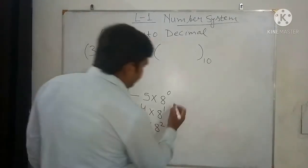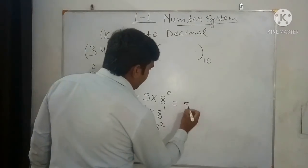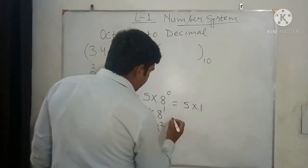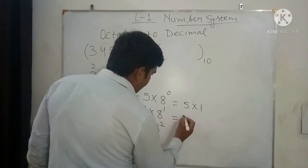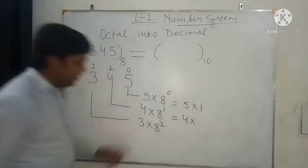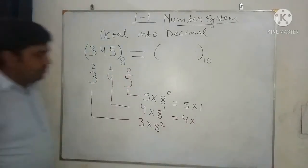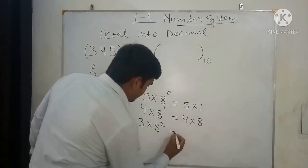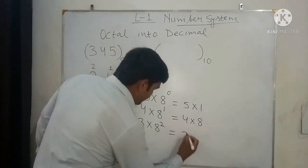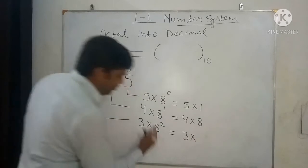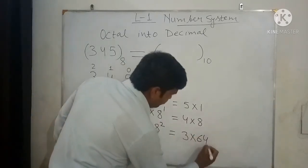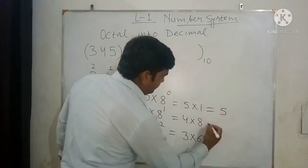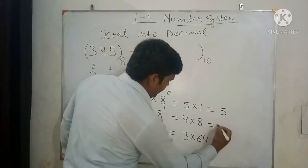Now we find the values. 5 multiplied by 8 to the power 0 equals 5. 4 multiplied by 8 to the power 1 gives 8, so 4 times 8 equals 32. 3 multiplied by 8 to the power 2 gives 64, so 3 times 64 equals 192.